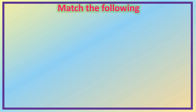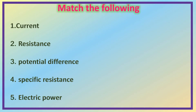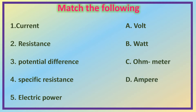So, match the following. First: current. Second: resistance. Third: potential difference. Fourth: specific resistance. Fifth: electric power. The options are — A: Volt, B: Watt, C: Ohm meter, D: Ampere, and E: Ohm.